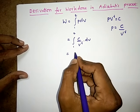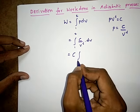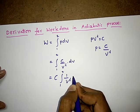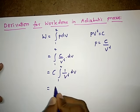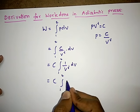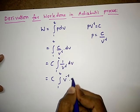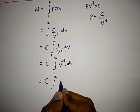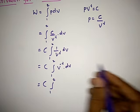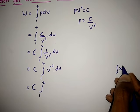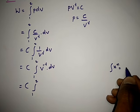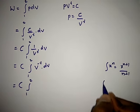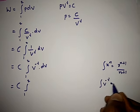So I write P here as C by V to the power of gamma into dV. Because C is constant, I can write it outside, and this is the integration from 1 to 2 of 1 by V to the power of gamma dV. This can be written as integration from 1 to 2 of V to the power of minus gamma dV. We know that integration of x to the power of n equals x to the power of n plus 1 by n plus 1.